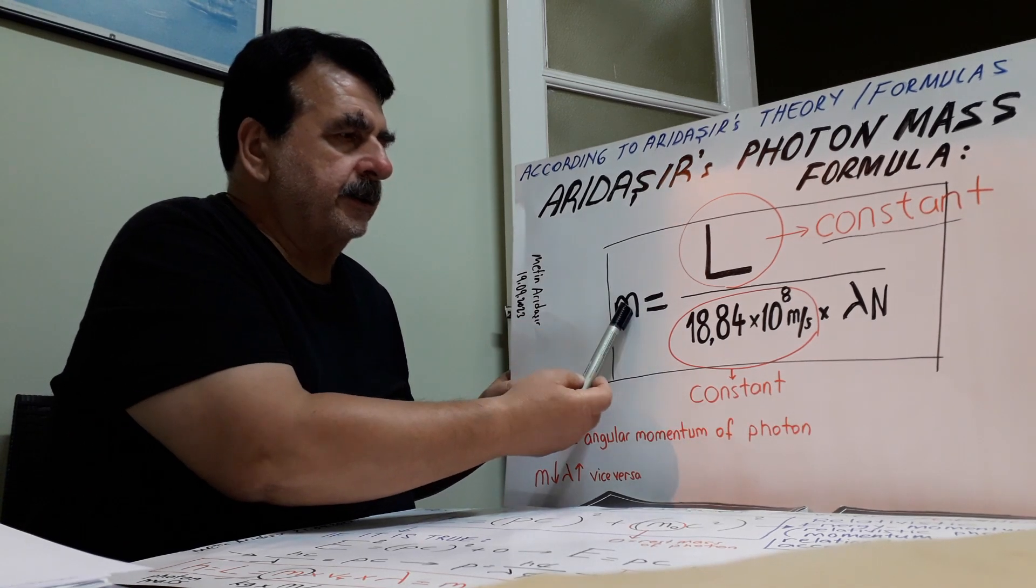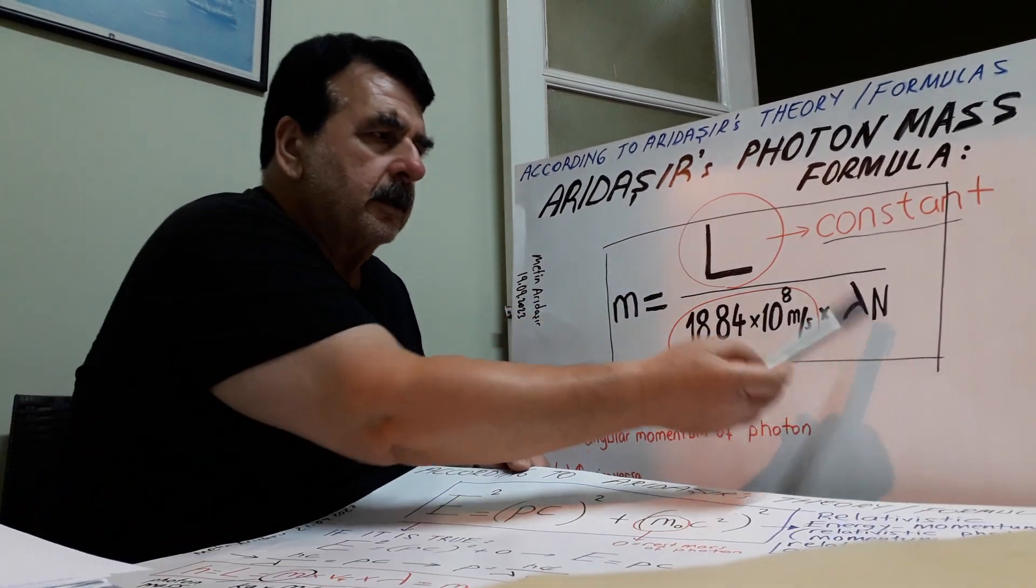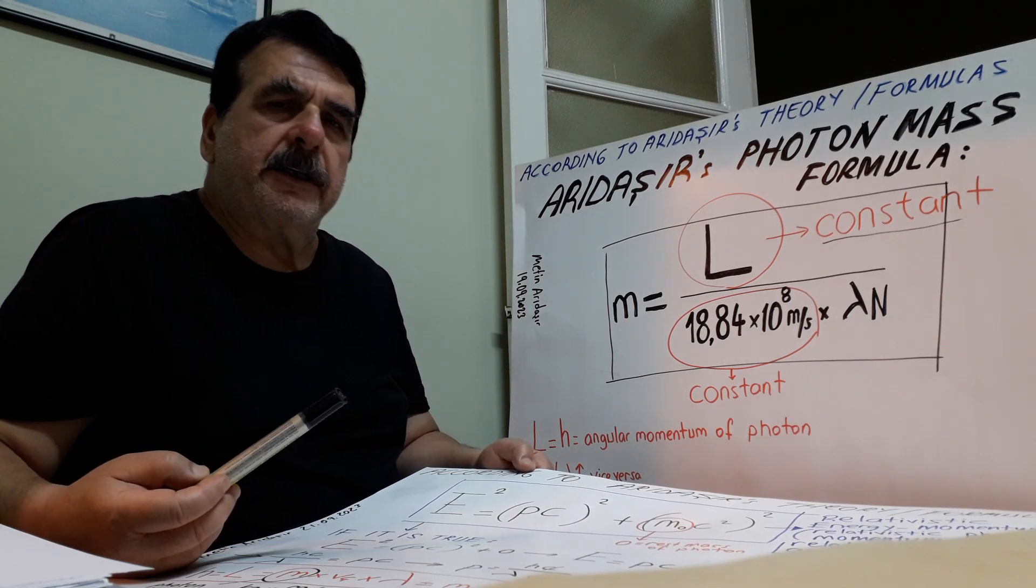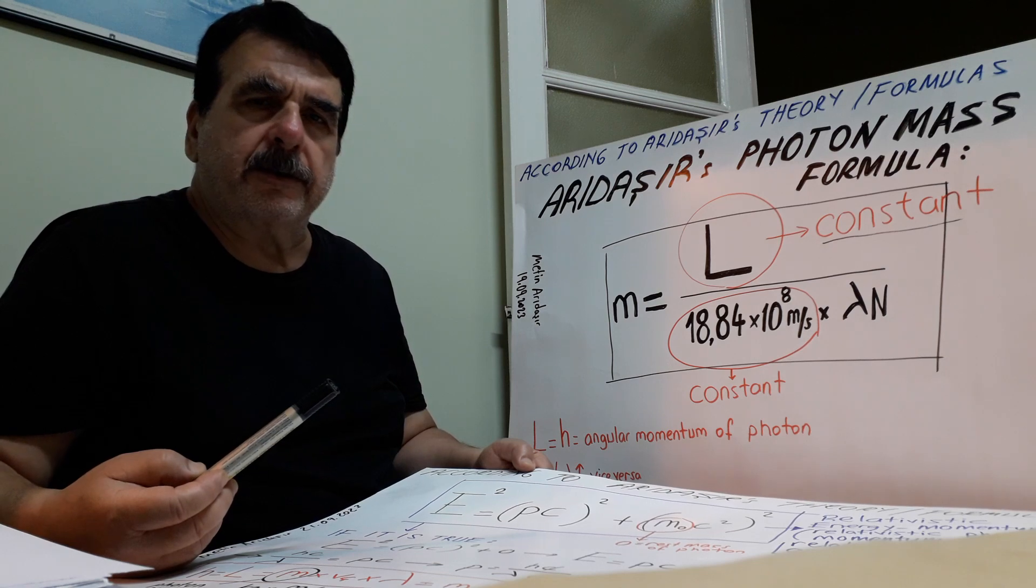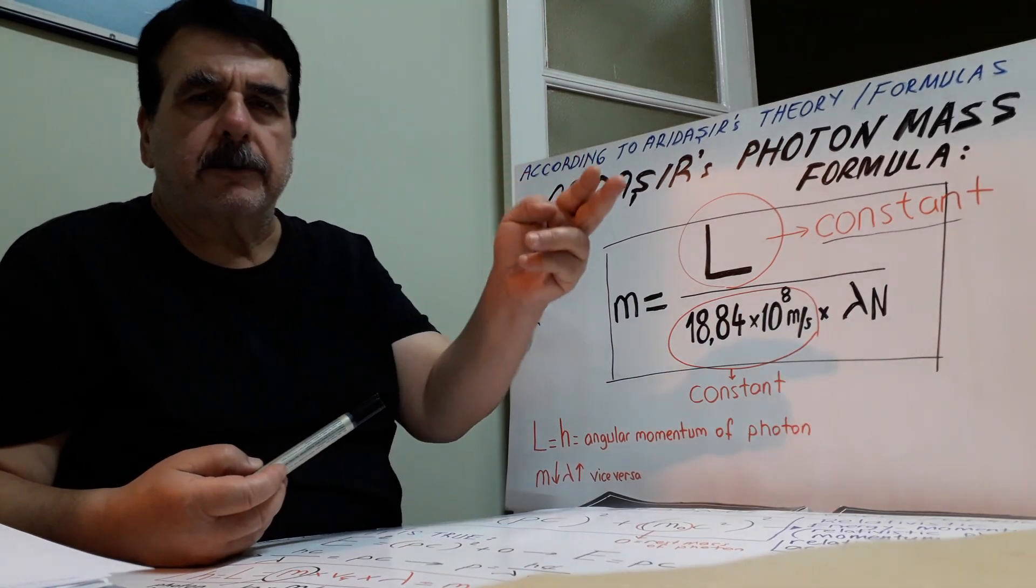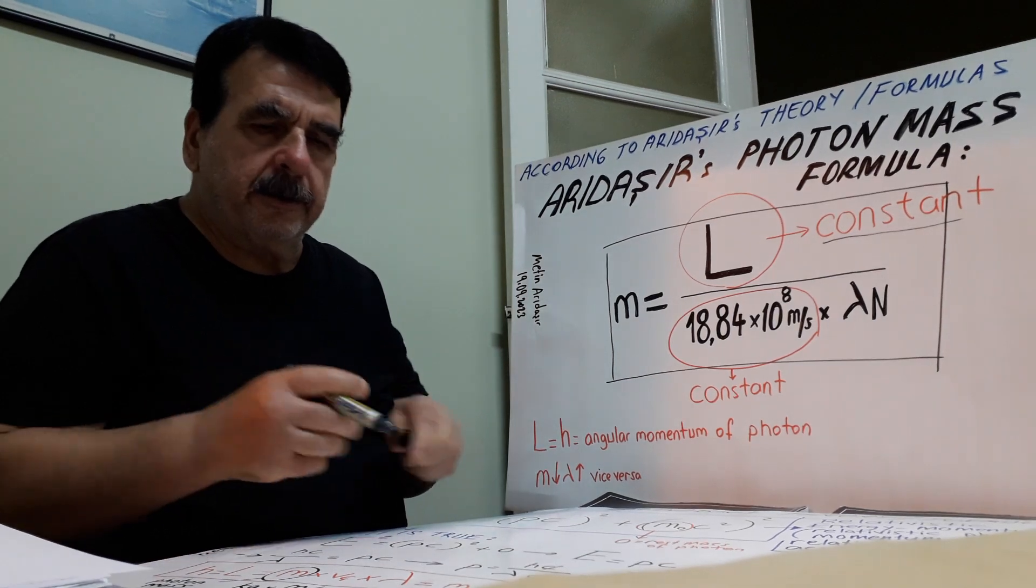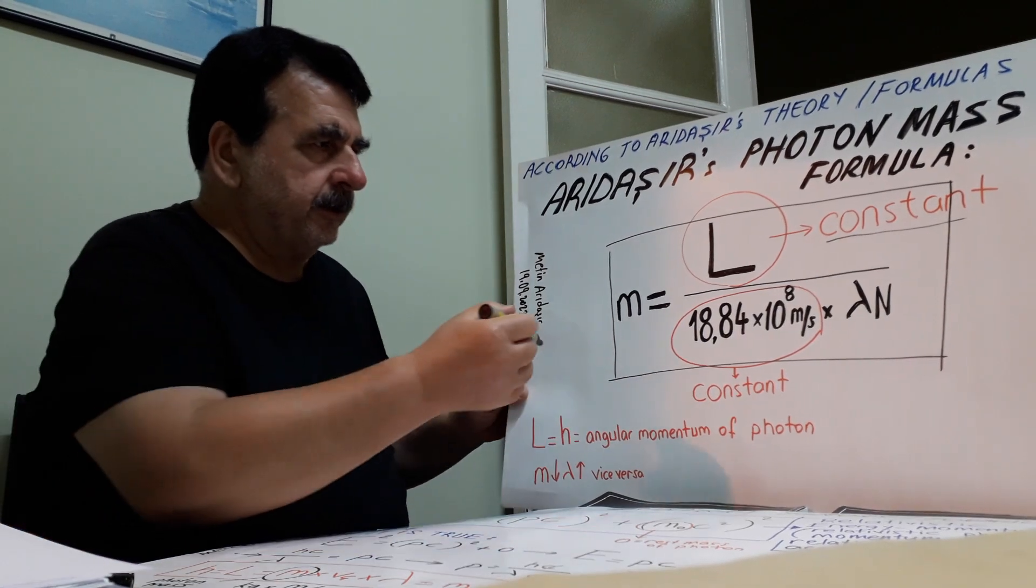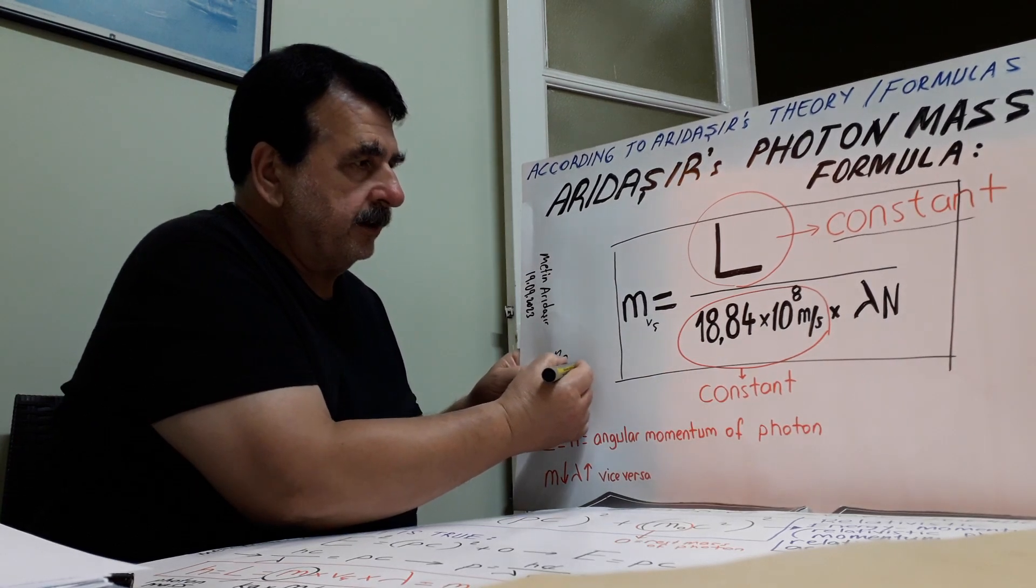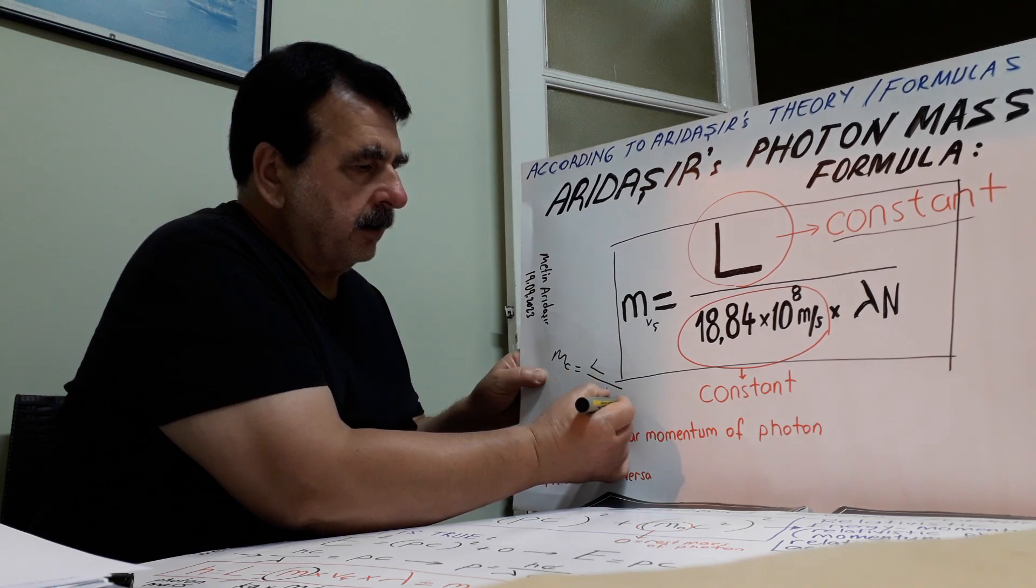And angular momentum is constant. Here, this is mass, this is wavelength. If we know the wavelength of electron motion form, we can easily find masses of photons. Linear velocity mass formula and the other c-direction component mass formula. This is Vg.